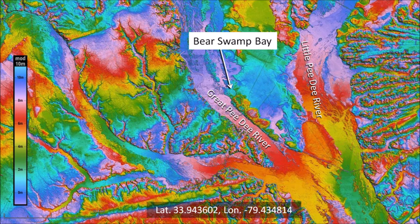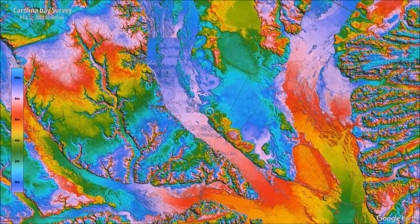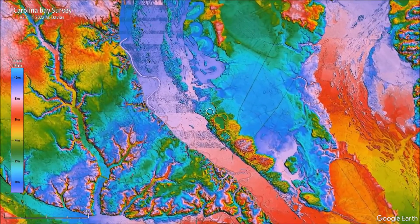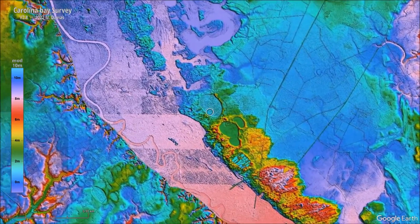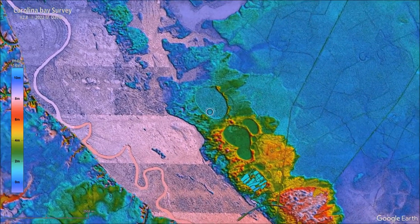Today, the Great Pee Dee River is a meandering stream, but its floodplain has a width of 2.5 kilometers. The Little Pee Dee River is also a small stream, but its floodplain has a width of 1.5 kilometers. Bear Swamp Bay is 56 kilometers from the Atlantic Ocean and Myrtle Beach, South Carolina. As we zoom in, we can see that there are not very many Carolina Bays on this terrain. There are traces of some very large bays, but most small bays have disappeared due to water erosion.